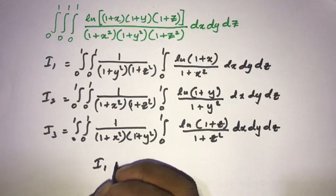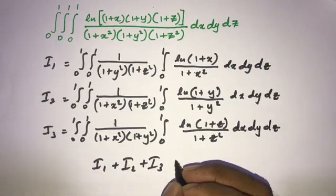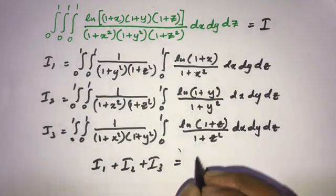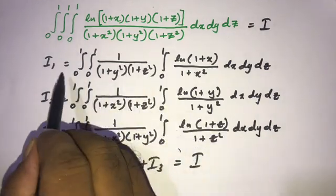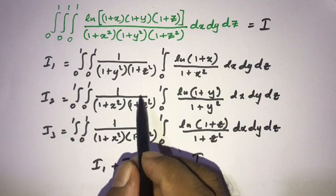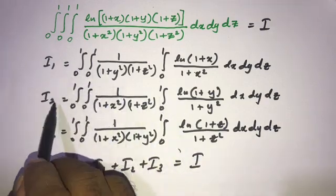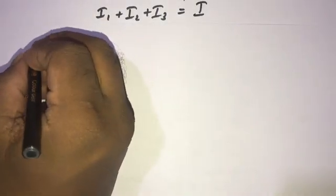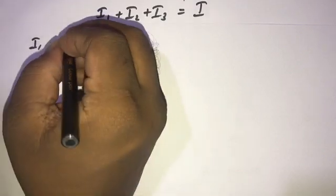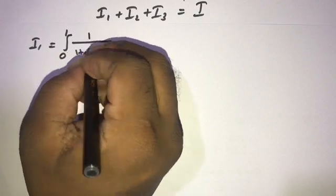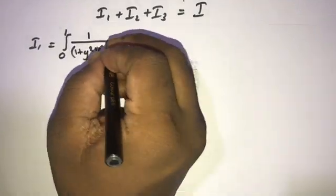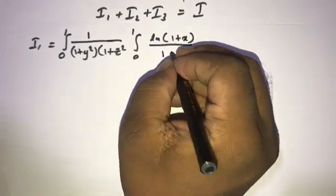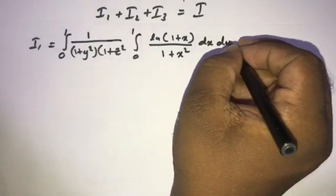And then if we take I1 plus I2 plus I3, this is equal to the original integral I. So I1 plus I2 plus I3 is also equal to I. Now we are going to evaluate I1. Actually, these are symmetric integrals, so if we evaluate I1, it is equal to I2 and I3 because definite integration is independent of the variable.